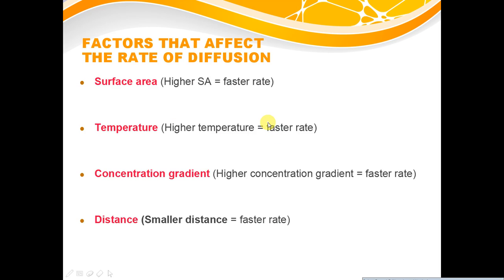The first part of this section wants you to understand the different factors that affect the rate of diffusion. There are four main factors: surface area, temperature, concentration gradient, and distance.